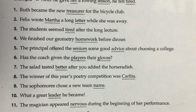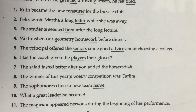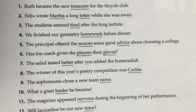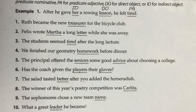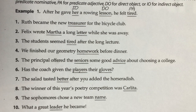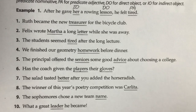This is our final practice before the test today. I'm going to go over the first 10 problems. This is in the same format as the test — on the test there will be an underlined word and you'll have to say what part of the sentence it is. The only difference is that this only has complements: direct objects, indirect objects, objective complements, predicate nominatives, and predicate adjectives. On the test you'll also have to find subjects and verbs, so just be aware of that.